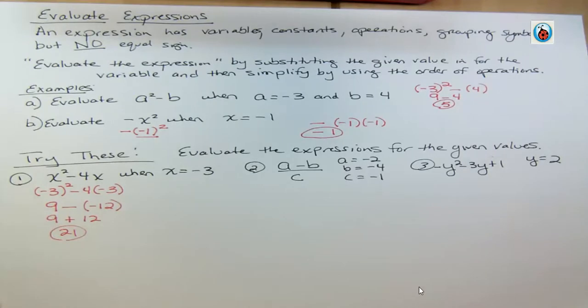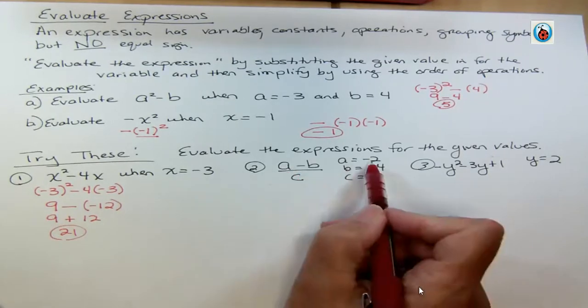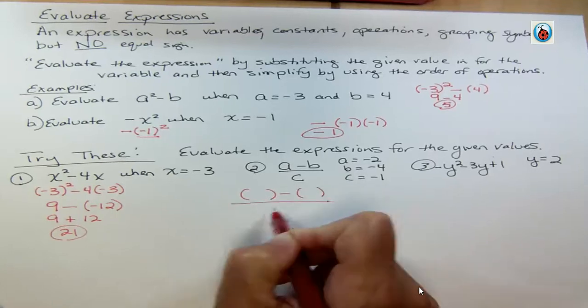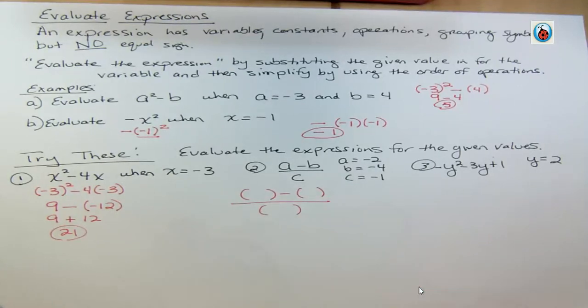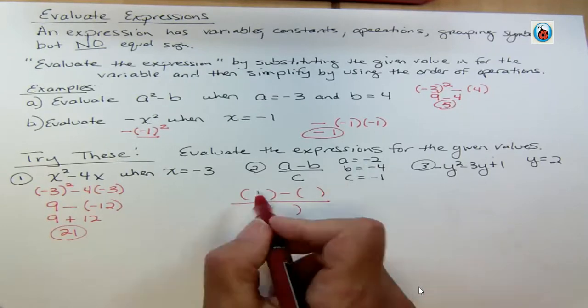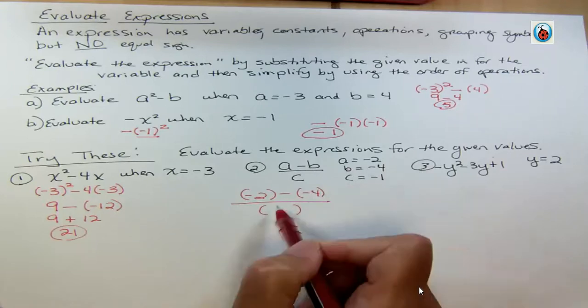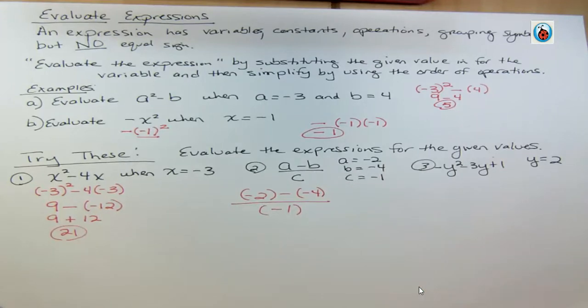Alright, number 2. We're gonna replace the A with the negative 2. So I'm gonna replace that, I'm gonna replace B, and I'm gonna replace C. I'm putting parentheses there just to enforce to you what I'm thinking of as I do that. The A is negative 2, the B is negative 4, and the C is negative 1.